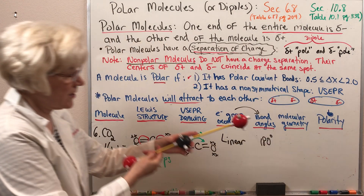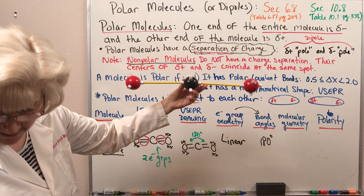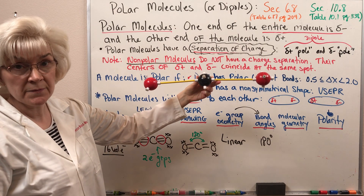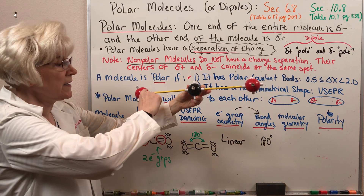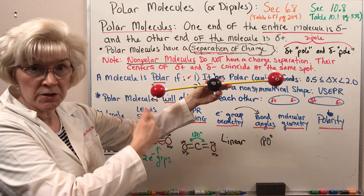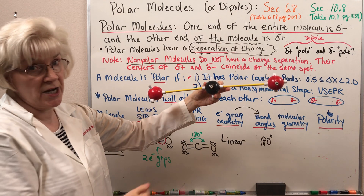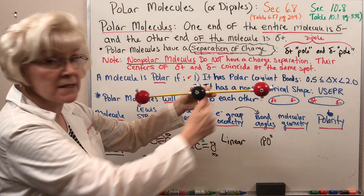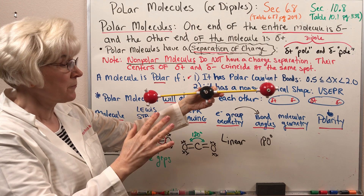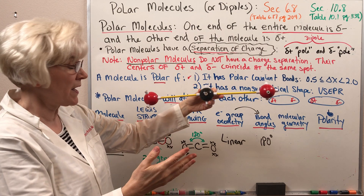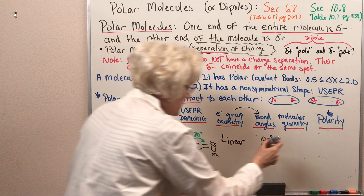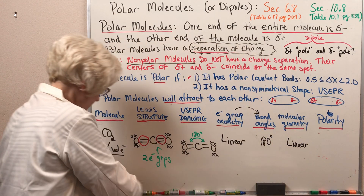Showing a model of carbon dioxide: yes, each of these bonds is a double covalent bond, but in terms of VSEPR they count as one electron group, with those electron groups repelling 180 degrees apart. Whenever all electron groups are involved in a bonding situation, the molecular geometry will be the same as the electron group geometry. So carbon dioxide is a linear molecule.